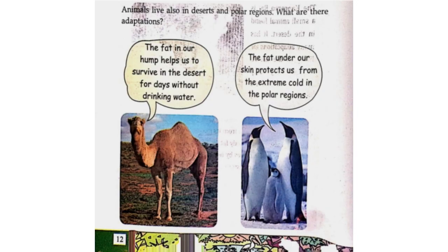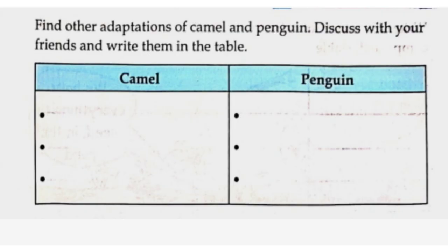Animals also live in deserts and polar regions. What are their adaptations? The fat in our hump helps us to survive in the desert for days without drinking water. The fat under our skin protects us from the extreme cold in the polar regions. Find other adaptations of camel and penguin. Discuss with your friends and write them in the table.